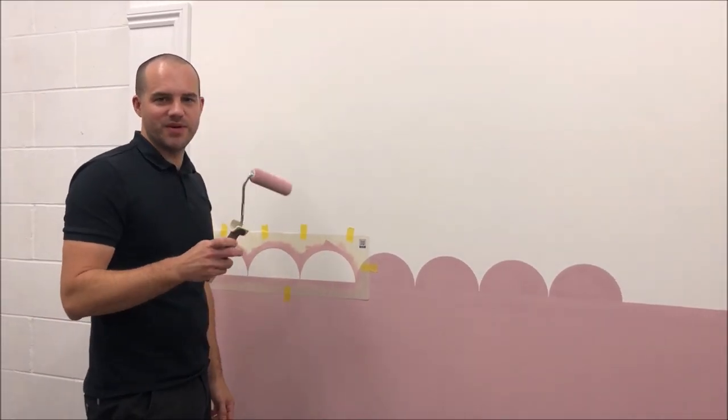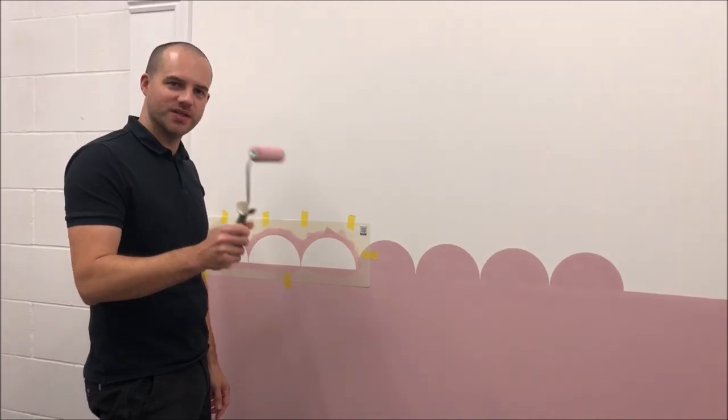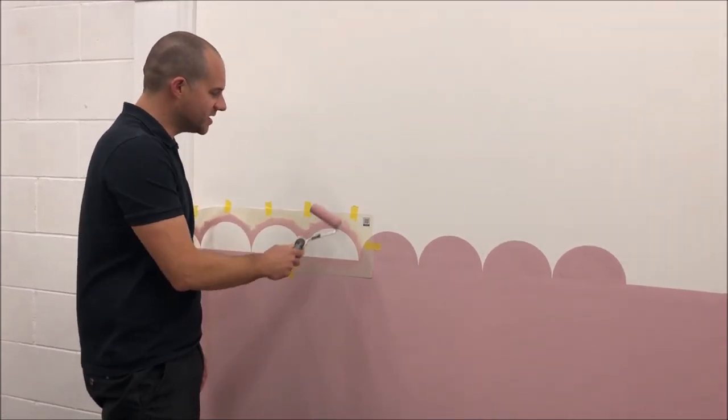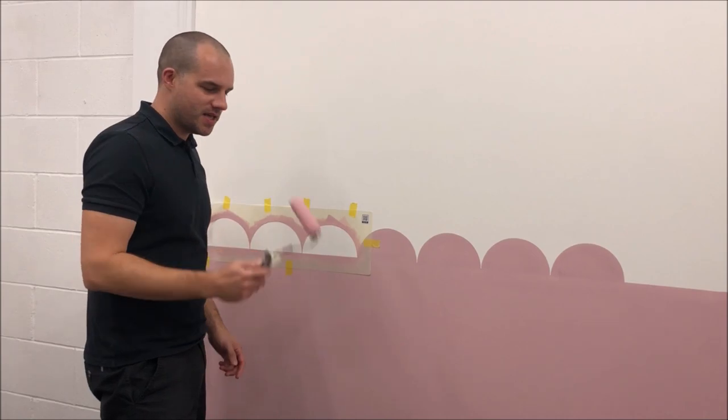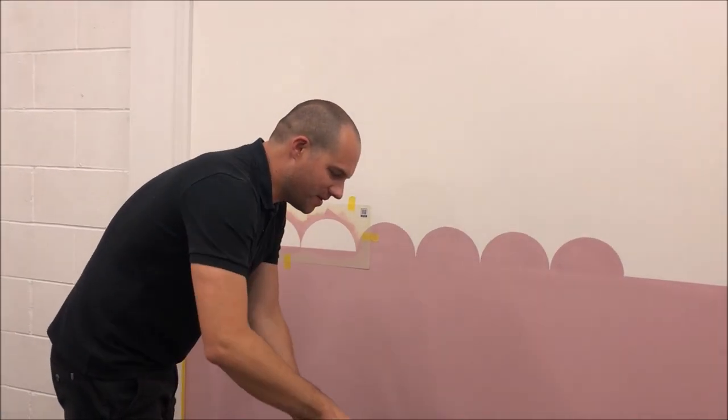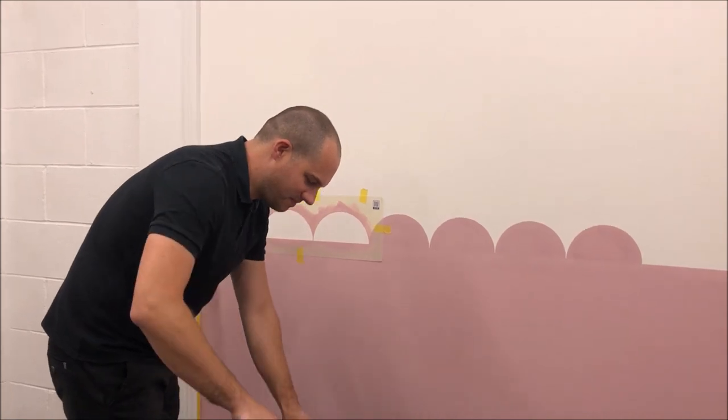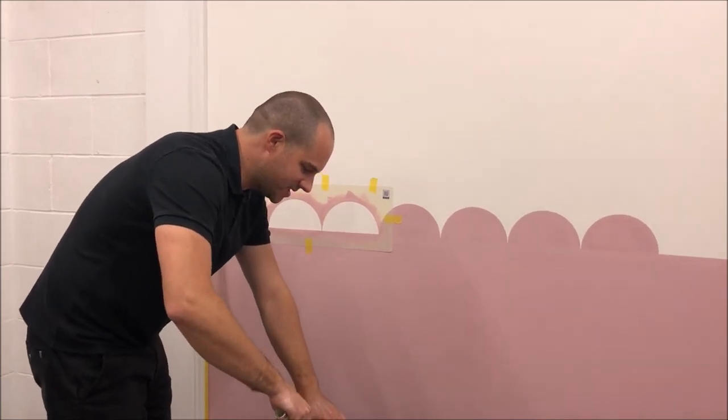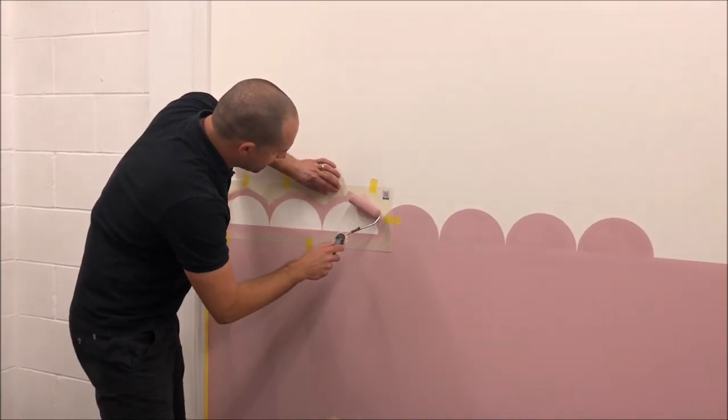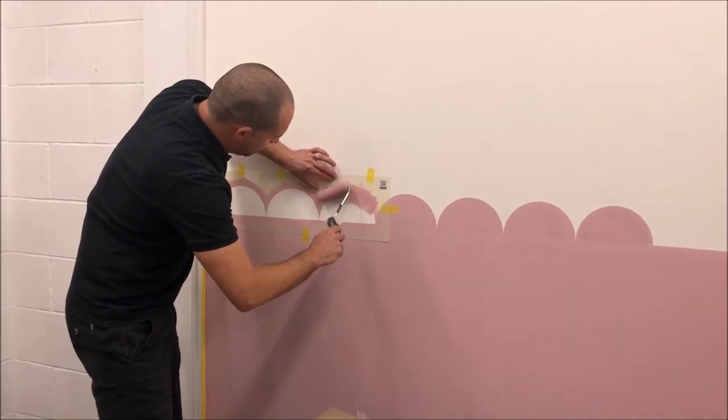Okay, so we were really happy with the results we got with our roller. So we're going to use the roller for the rest of the project because it is a lot quicker. I'm going to get a bit more paint on my roller, remember to offload it onto some card, and then just go to the stencil and fill in our shapes.